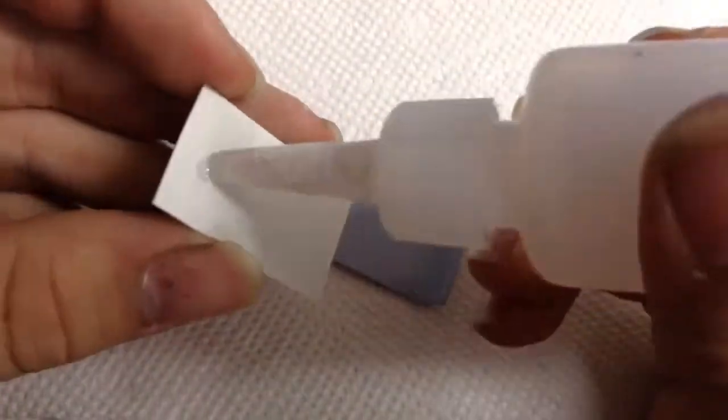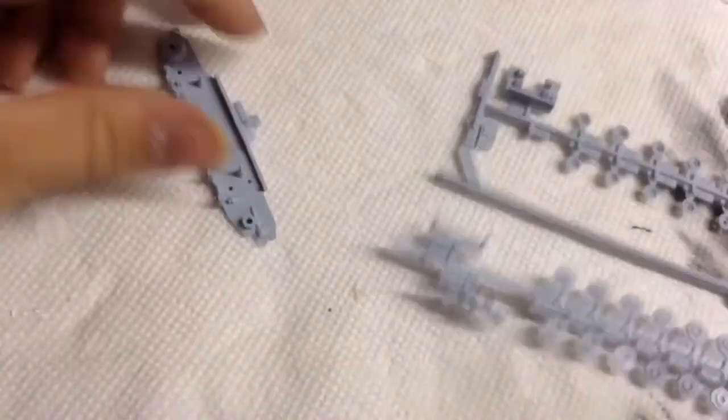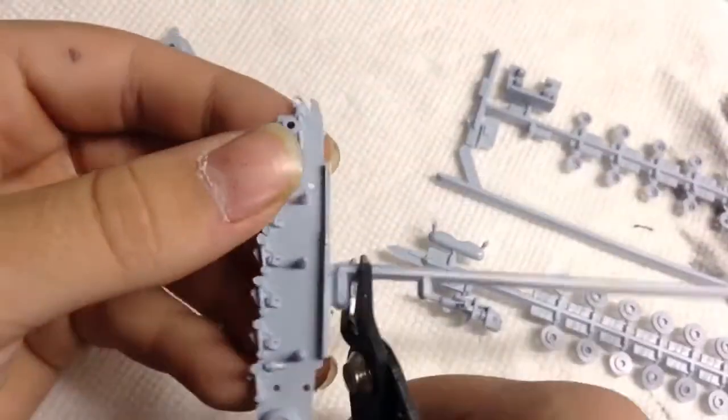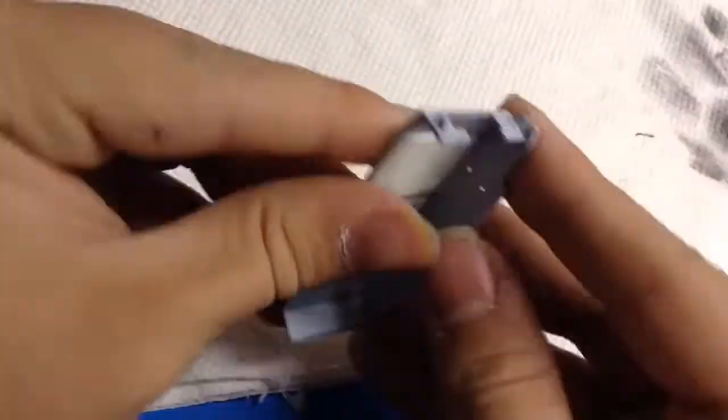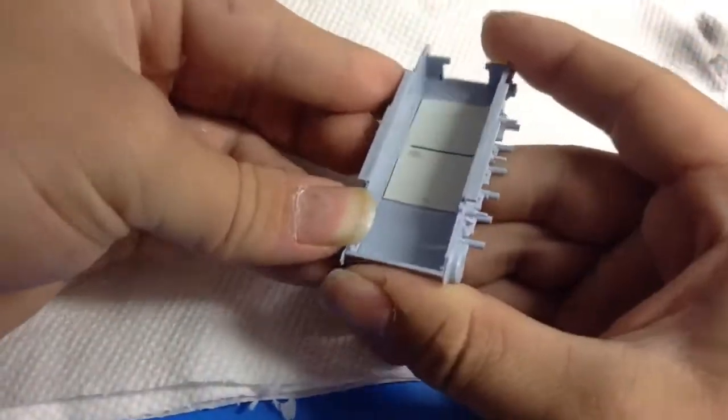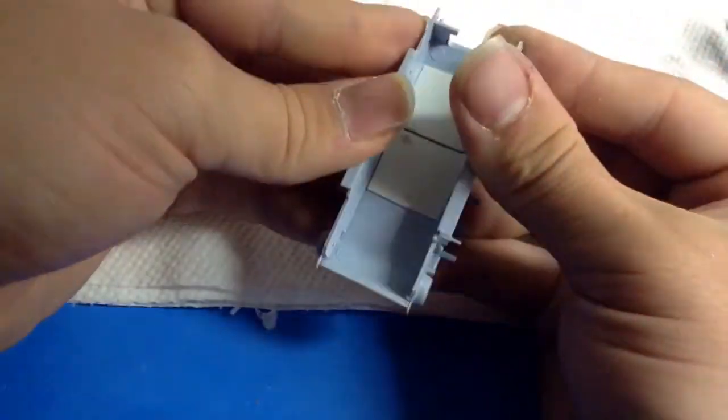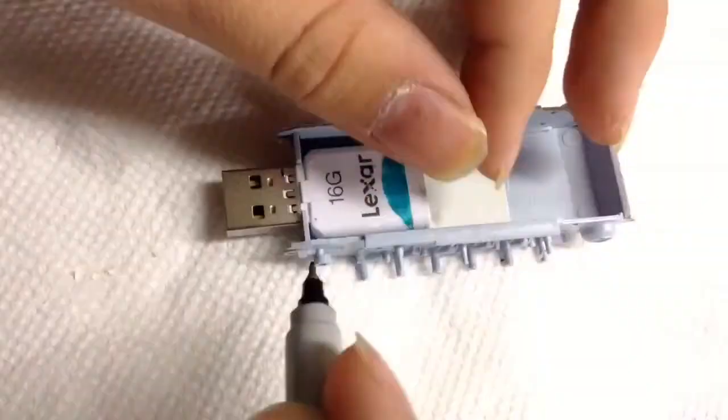I started off by gluing the piece of styrene in to make sure that the USB sat flush. I then started working on the hull, snipped that off, and once I cleaned it up, I attached the sides to the bottom of the hull. I did most of the assembly on this project with super glue to ensure strong joints.